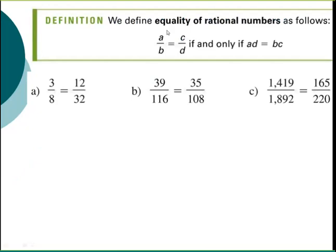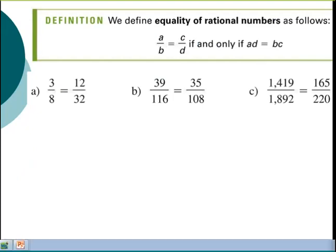Rational numbers are fractions generally, or at least they can be represented as fractions. We talked about equality of fractions: two fractions are equal if and only if a times d equals b times c — in other words, if you cross multiply a times d and that equals b times c.